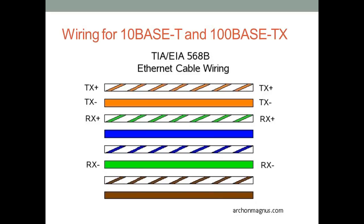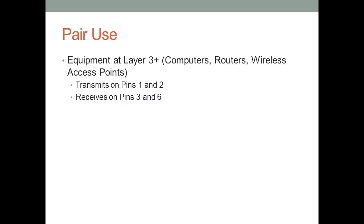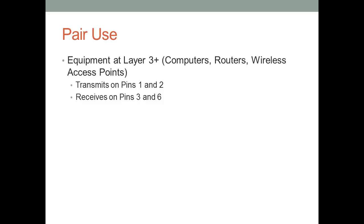Equipment at Layer 3 and above I consider to be transmit-type devices — devices that originate packets. These devices transmit on pins 1 and 2 and receive on pins 3 and 6. To connect them to a switch or hub, the switch or hub must receive on pins 1 and 2 and transmit on pins 3 and 6. Equipment at Layers 1 or 2 will switch the transmitting and receiving pairs accordingly.